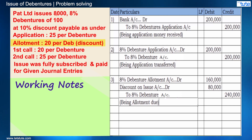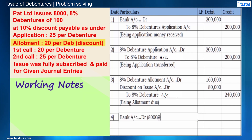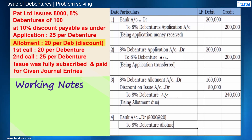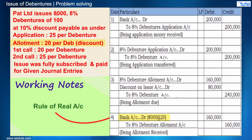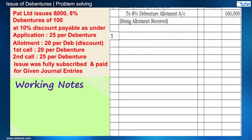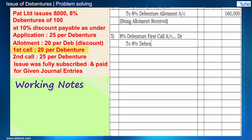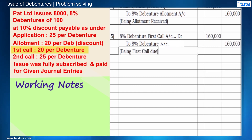The next entry is for the amount received on allotment — bank account debit to 8% debenture allotment account. Here again, cash or the amount on allotment is received, so bank account is debited. We can also have a look at the first call due and then received.